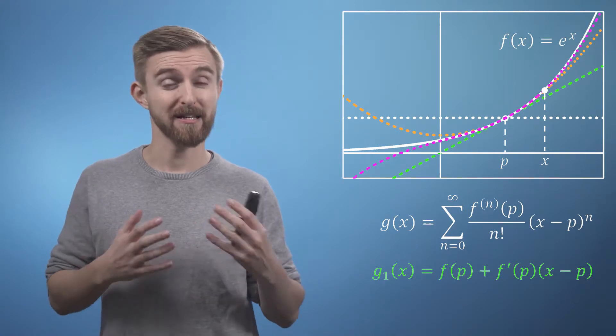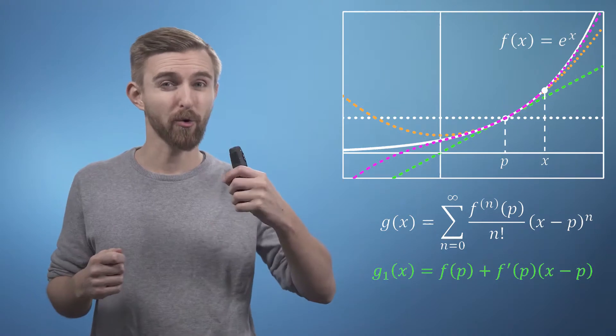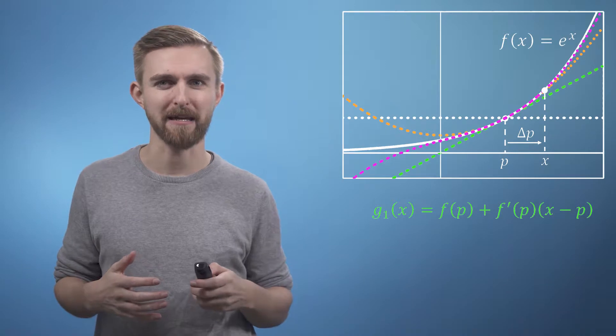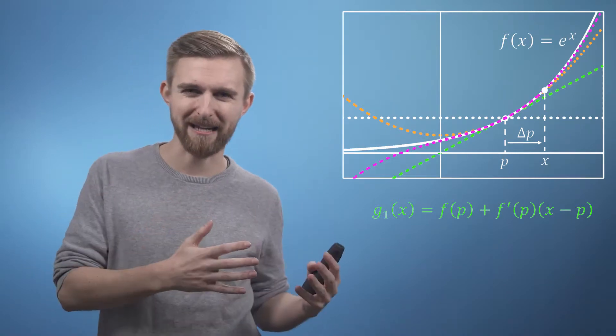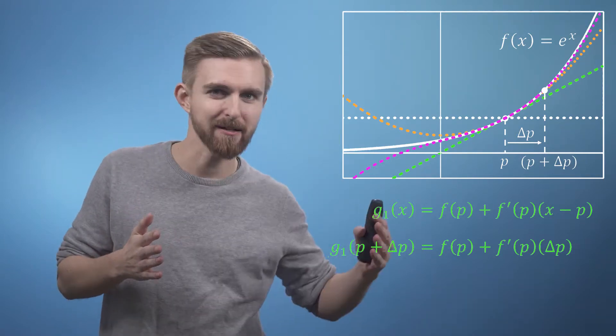So I'm now going to say that our distance from p, which we currently call x minus p, we will now call delta p to signify that it represents a small step size away from p. And we can also recast x now in terms of p, saying that x is just p plus delta p.